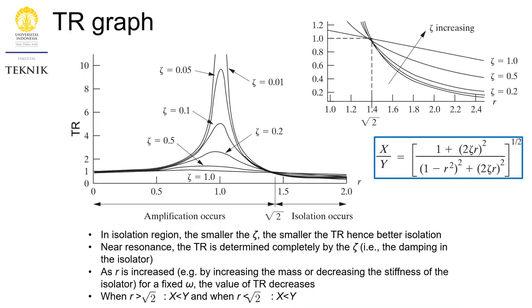Next is the concept of the TR graph — the transmissibility ratio graph — which is similar to the magnification factor graph, except that we now introduce zeta. We need to define the critical point, which is at R equal to the square root of 2. When R — the ratio of omega divided by omega_n — equals square root of 2, the transmissibility equals 1, so X equals Y.